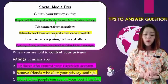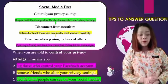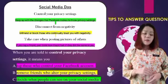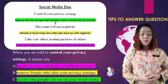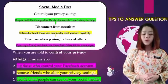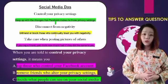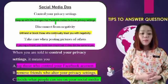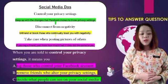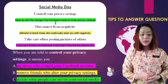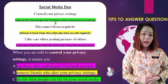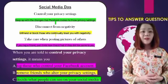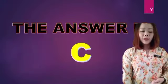Option B: remove friends who alter your privacy settings. From the text, removing friends is because they are blasting you with negative content. Therefore, B is wrong. Option C: decide what people can see on your social media. From the text, keeping up with the changes that Facebook makes to those privacy settings means you change those settings and people will only be able to see what you decide they can see. Therefore, the answer is C.